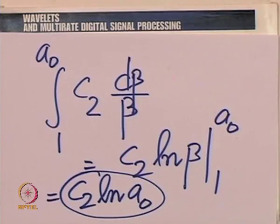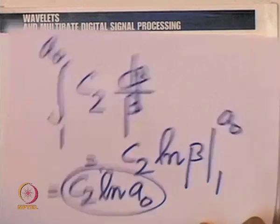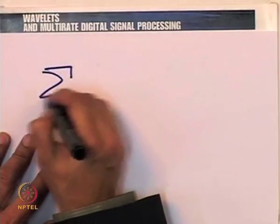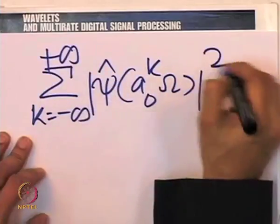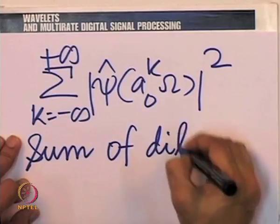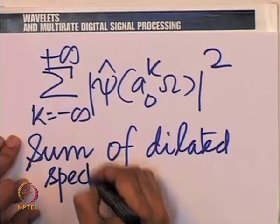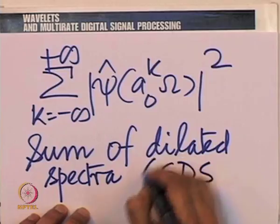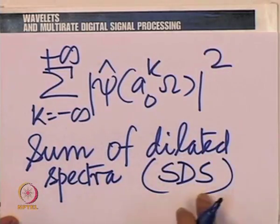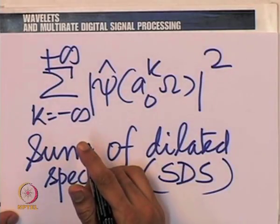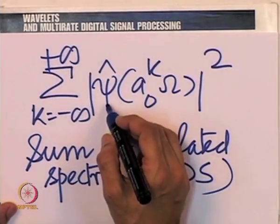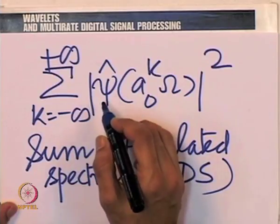Once we have the upper bound on the summation, we are guaranteed admissibility. We introduce terminology: we call this summation the sum of dilated spectra, abbreviated SDS. It has secondary arguments psi and a-naught, and primary argument omega — just as in the continuous wavelet transform we distinguished primary and secondary arguments.